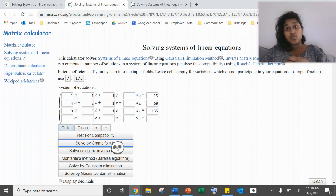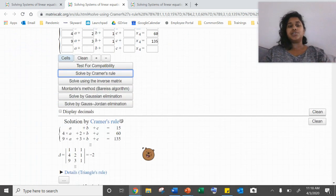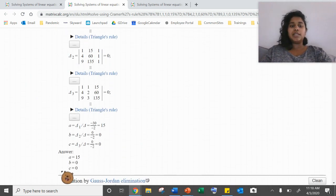For those of you who are like, whoa, what are all these rules? I don't remember how to solve matrices. You sure can click through these and play with these all that you want, but I'm just going to go ahead and get to the answer. So solve by Kramer's rule. If I scroll down, there's all of the solution for me, but here are my answers. A equals 15, B equals zero, C equals zero.